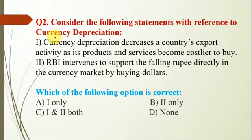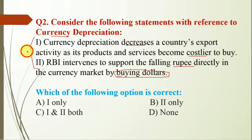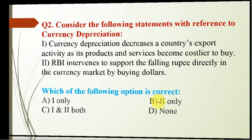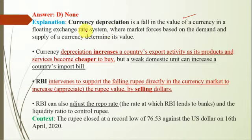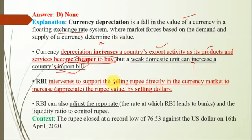Question number 2 is with reference to currency depreciation. Statement one: currency depreciation decreases a country's export activity as its products and services become costly to buy. Statement two: RBI intervenes to support the falling rupee directly in the currency market by buying dollars. Both statements are incorrect, so the option will be D. Currency depreciation means a fall in the value of a currency in a floating exchange rate system. Statement one is incorrect because currency depreciation actually increases a country's export activity, as products and services become cheaper to buy. However, a weak domestic currency can increase the import bill. RBI intervenes to support the falling rupee by selling dollars, not buying — that's why statement two is also incorrect.